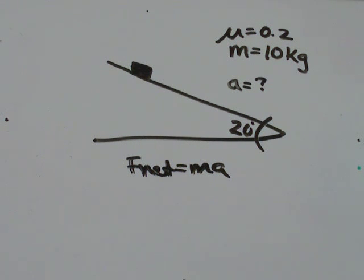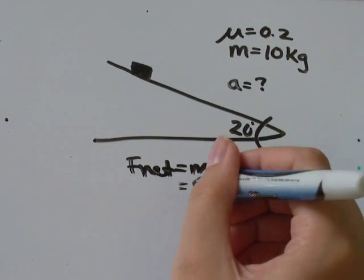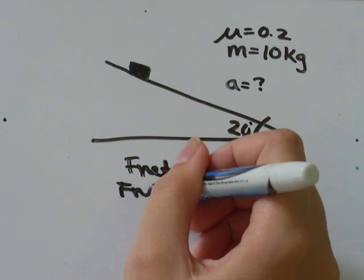So Fnet equals MA. A is what we're solving for. We already know M is equal to 10 kilograms, so 10 times A equals Fnet.